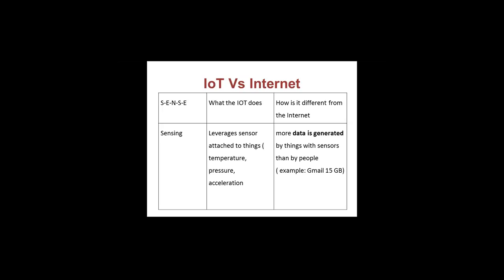IoT leverages sensors attached to things. For example, the current internet will not help you find the temperature in your room. IoT puts a thermometer there, connects it to the internet, and helps you measure that temperature. Because of this, more data is generated — if there are 20 billion users on IoT, there are 20 billion data points being generated, more than what is possible for human beings to manage.